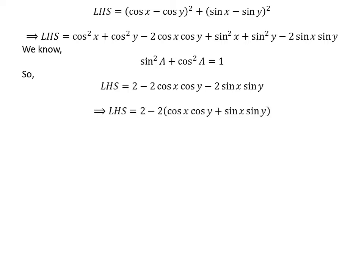Taking the common factor minus 2 out of the last two terms, the left hand side equals: 2 minus 2 times (cosine x times cosine y plus sine x times sine y).